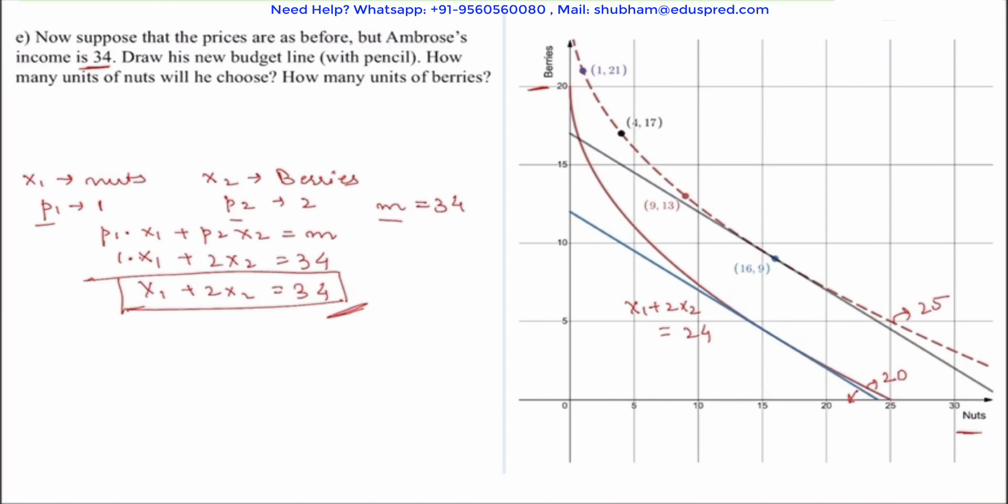Now the further question asks us how many units of nuts will he choose, or how many units of berries will he choose? And by what logic will Ambrose calculate how many units of nuts or berries to choose? So the simple concept that defines the consumption would be that the optimal consumption position is where your indifference curve is tangent to the budget line, so that the consumer is exhausting his entire income since the preferences are well behaved and also he is able to achieve the highest level of utility.